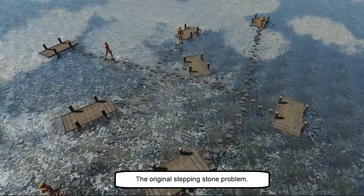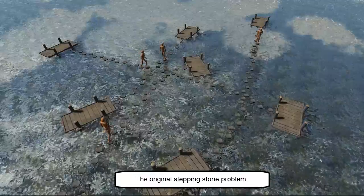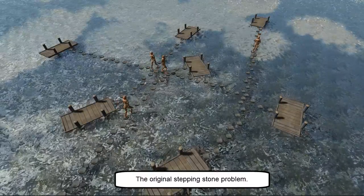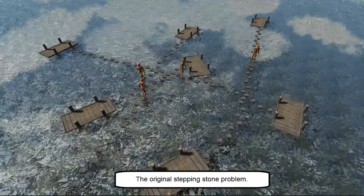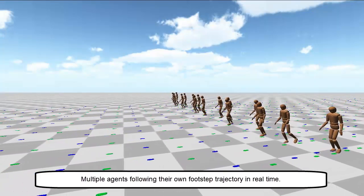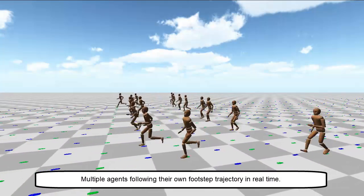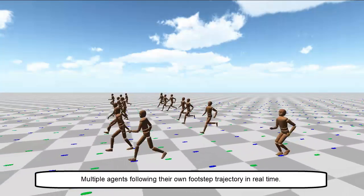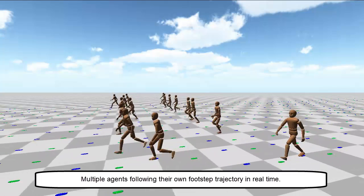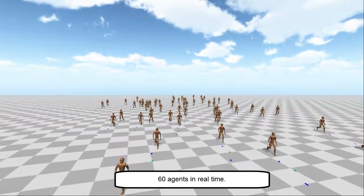We can solve the original stepping stone problem for groups of agents in real time. We can handle over 60 agents in real time, each one following his own footstep trajectory. Agents exhibit diversity of locomotion styles based on footstep trajectories and the motion clips available.